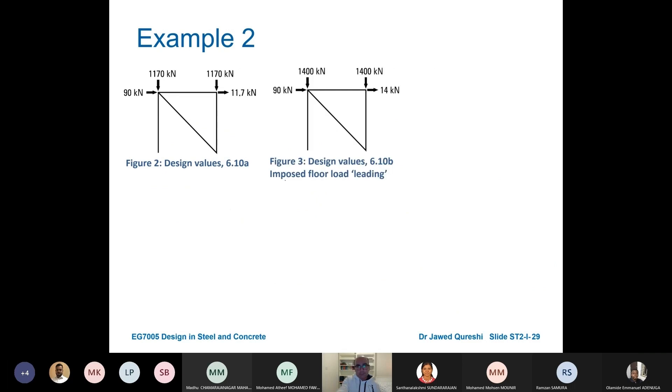Equivalent horizontal load is 11.3. So this is the diagram for 6.10b when we are treating wind as leading variable. Now first one is 6.10a, first one is by treating imposed floor load as leading, the second one is by treating wind as leading. Now all of these different combinations should be checked.